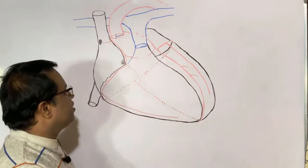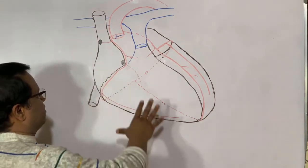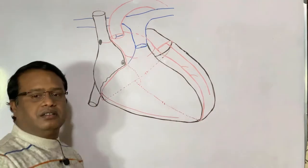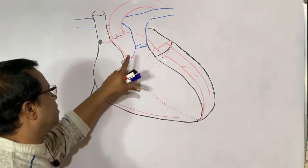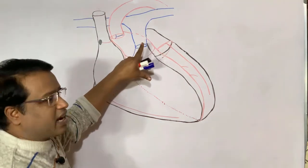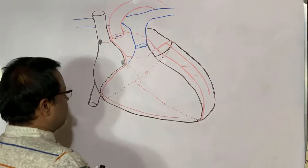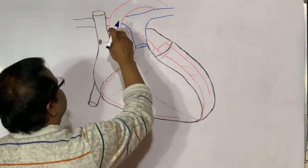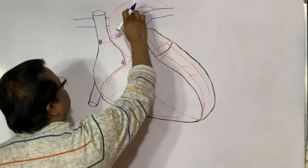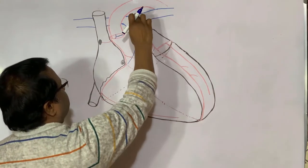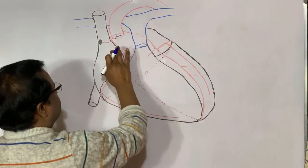The coronary circulation — that is the anterior view of heart. You can see all the arteries I have drawn to reduce the time span. We have the ascending aorta, arch of aorta, and pulmonary artery.